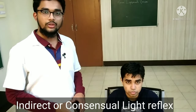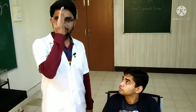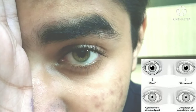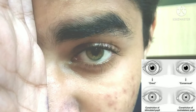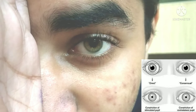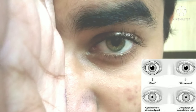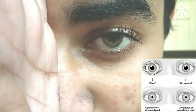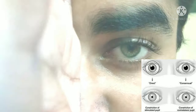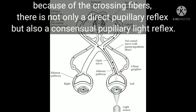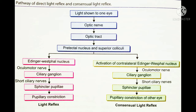For consensual light reflex, we are going to throw light in one eye to observe pupillary constriction in the other eye. For that, we are going to ask the subject to place the hand — the ulnar border of the hand — at the nasal bridge. So in this indirect or consensual light reflex, we can see that when we are showing the light on one eye, the pupils of both eyes will constrict. Here you can see the pupillary constriction. Because of the crossing fibers, there is not only a direct pupillary reflex, but also a consensual pupillary light reflex.